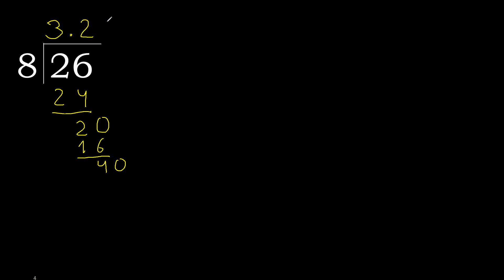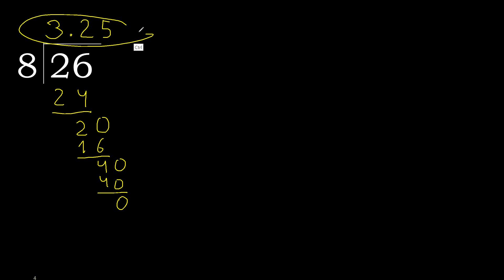40: 8 multiplied by 5 equals 40. 40 is not greater. Subtract 0. Remainder is 0, therefore finished. 26 divided by 8 equals 3.25.